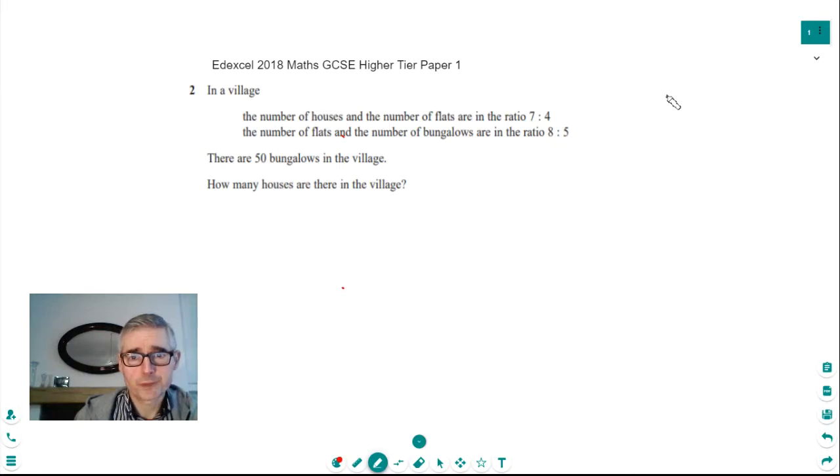So the first thing that we need to look at is this second ratio that we're given here. Given the number of flats and bungalows is in that ratio and we're also given that there's 50 bungalows. So what we know is that that ratio 8 to 5, the 5 represents the bungalows. So we can say 5 parts is equal to 50 bungalows. Now what that enables us to do is work out what one part is equal to. So one part of that ratio would be equal to 50 divided by 5, which is equal to 10 bungalows.